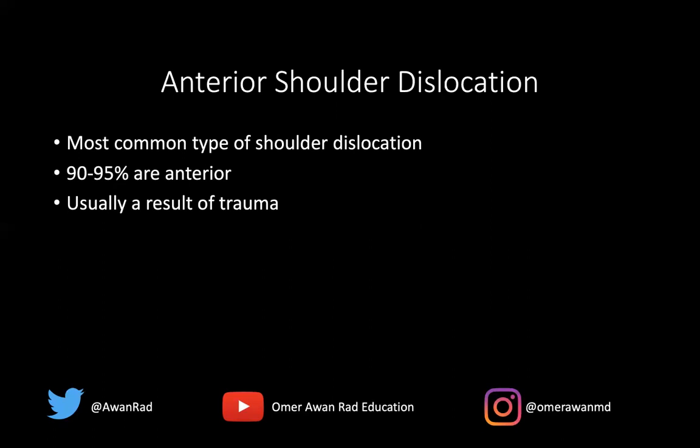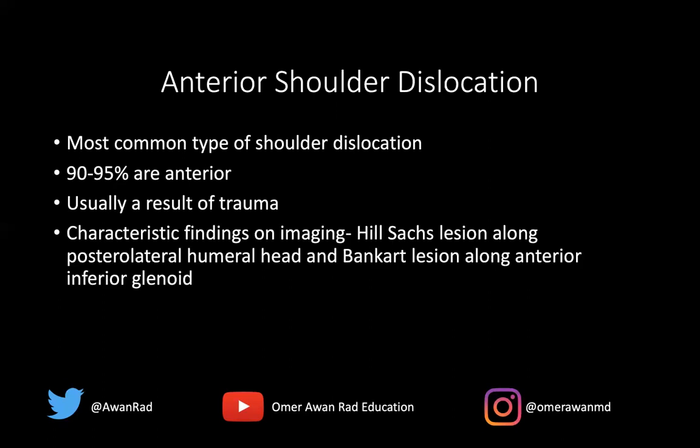I see anterior shoulder dislocations on a weekly basis; I may see a posterior one on a seasonal basis — that's the difference in incidence. We have characteristic findings in anterior shoulder dislocation: a Hill-Sachs impaction injury along the posterior lateral humeral head and a Bankart lesion along the anterior inferior glenoid. The Bankart lesion can either be labral or osseous — meaning the anterior inferior labrum can be torn without bone injury, or there can be a frank osseous Bankart lesion where there is also a bone bruise or injury to the anterior inferior glenoid.